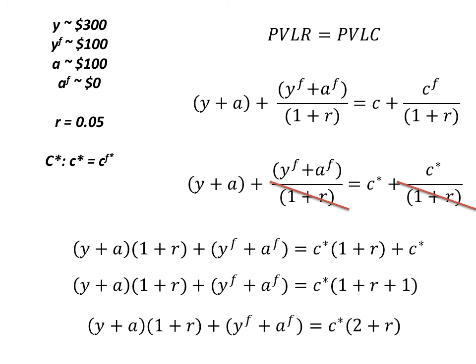Working just with the right-hand side and simplifying, we see the left-hand side is the same and on the right-hand side we're going to have C* multiplied by (2+r). The next step is simply to divide both sides by (2+r) so we can isolate our C* value.